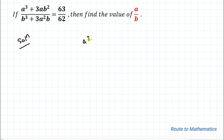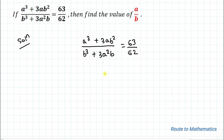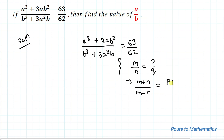So we have given a³ + 3ab² divided by b³ + 3a²b equals 63 by 62. The componendo and dividendo method is very useful to solve this type of rational equation. It states that if m/n = p/q, then (m + n)/(m − n) = (p + q)/(p − q).